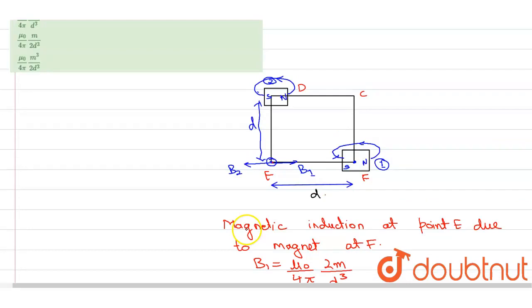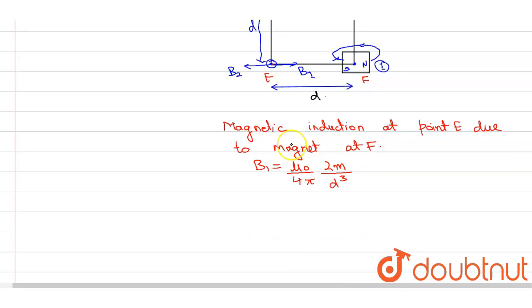Now let's find magnetic moment due to our second magnet. And this is at equatorial position. So magnetic induction at point E due to magnet at D, that is equatorial point.